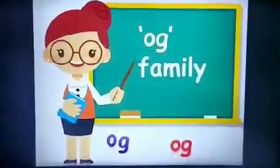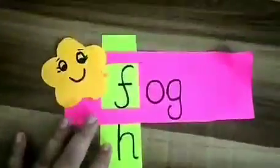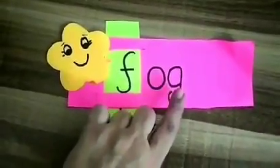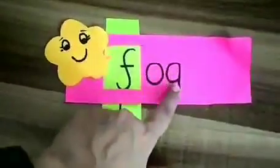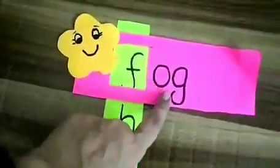So kids, let's come with me. As you can see, this is a slider, and this slider is of the Og family. Now kids, when we talk about a family, we always know that only the initial letter changes. The last two letters remain the same. Like in this, we have the Og family, so Og remains the same.